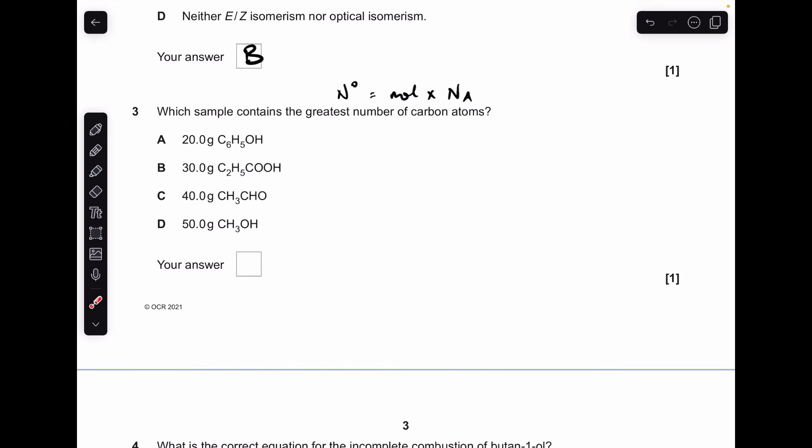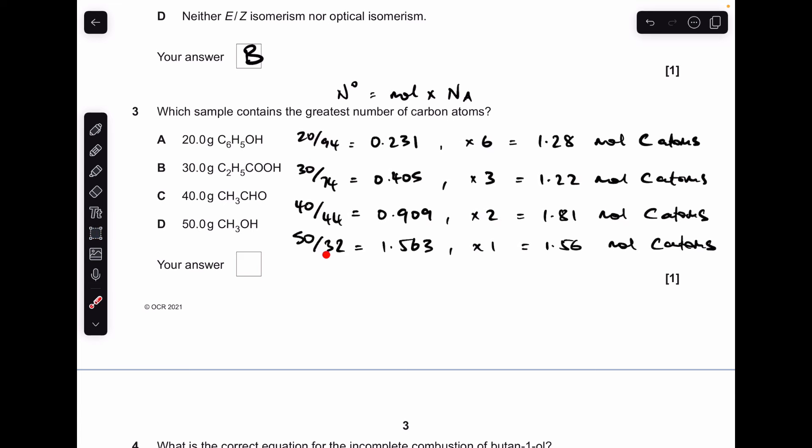Moving on to number 3. To calculate the number of particles, in this case carbon atoms, we need to work out the moles of carbon atoms and multiply that by Avogadro's number. So the first thing we need to do is calculate how many moles of each of these we've got. That's just mass over MR. Then we need to multiply by the number of carbon atoms in the molecule. See which set of moles is the largest and that's going to have the most carbon atoms. So there's all my mass over MR. Multiply by the number of carbons in the molecule. That's how many moles of carbon atoms we've got. And you can see the biggest number is this 1.81. So C is the answer.